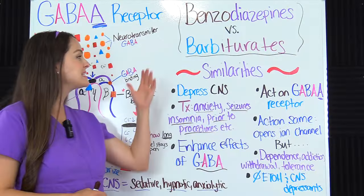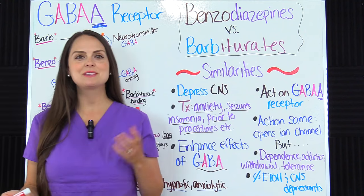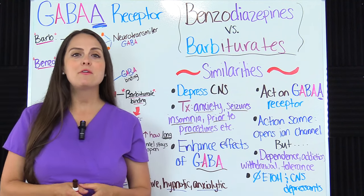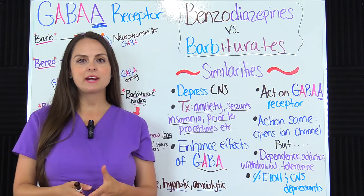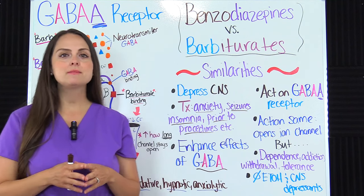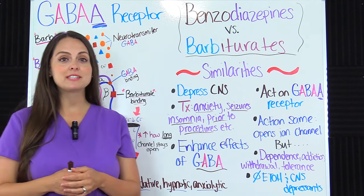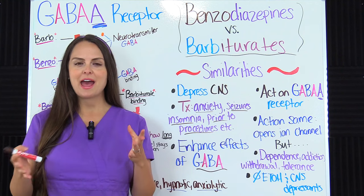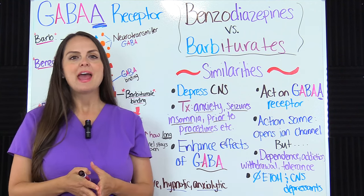First, let's talk about the similarities between benzos and barbiturates. They are both known for their sedative, hypnotic, and anxiolytic effects, and they achieve this by depressing our central nervous system. So they're both known as CNS depressants.